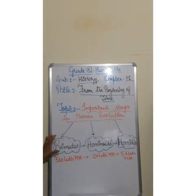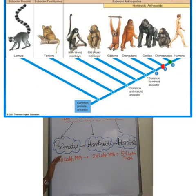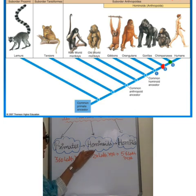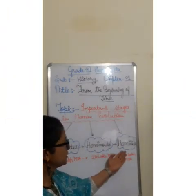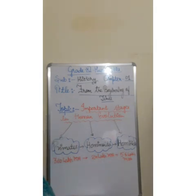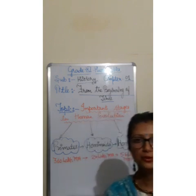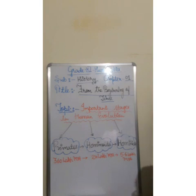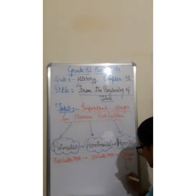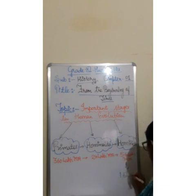Now the next topic is: what are the stages of human evolution, taken from Charles Darwin's theory of evolution? Under that, it is divided into three categories. The first stage is primates, which took place around 360 lakh years ago. The next phase was called hominoids, which took place around 24 lakh years ago. And the next phase was called hominids, with a duration of around 5.6 lakh years ago. The present human being, which we are right now, starts from around 1.6 lakh years ago.